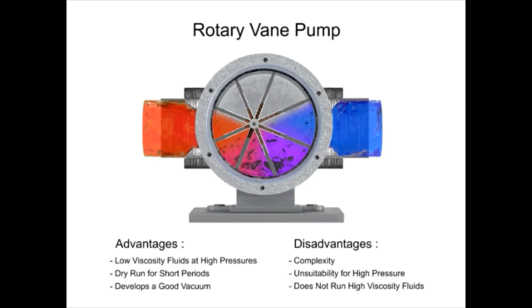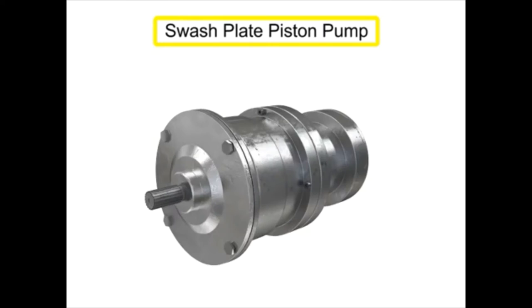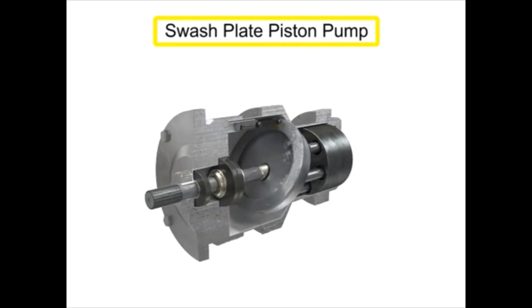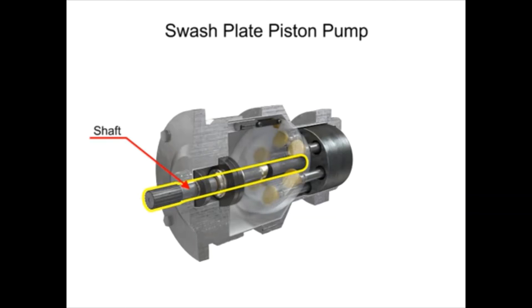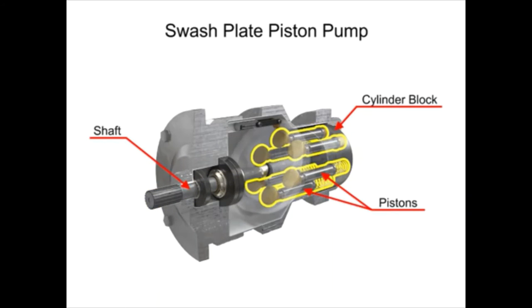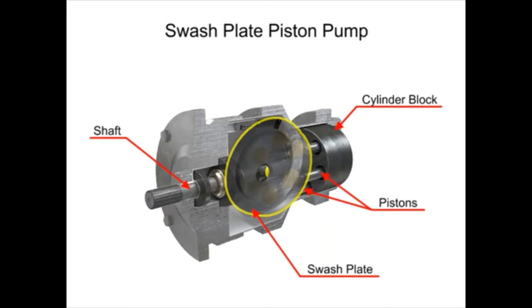Piston pumps come in many different forms. A swashplate is a device used to translate the motion of a rotating shaft into the reciprocating motion of a piston. Swashplate piston pumps have a rotating shaft connected to a cylinder block containing pistons, which are pressed against a stationary swashplate that sits at an angle to the cylinder.